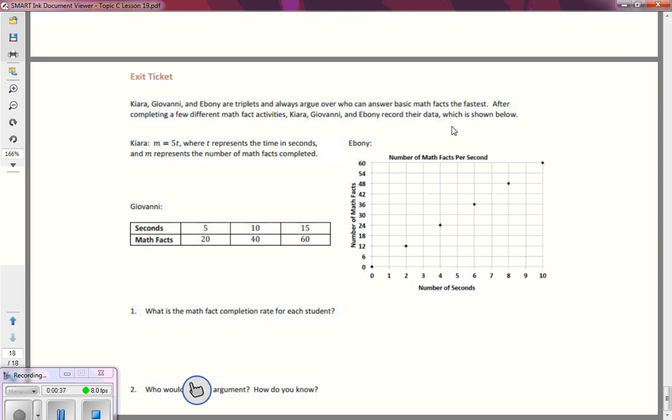So we have Chiara, Giovanni, and Ebony that are triplets, and they always argue over who can answer basic math facts the fastest. After completing a few different math fact activities, Chiara, Giovanni, and Ebony record their data, which is shown below.